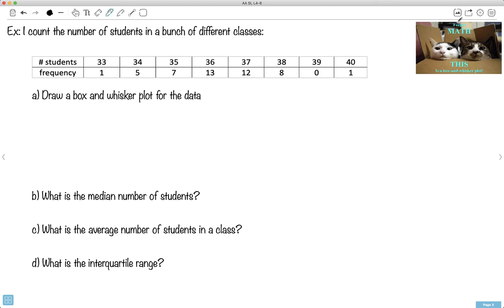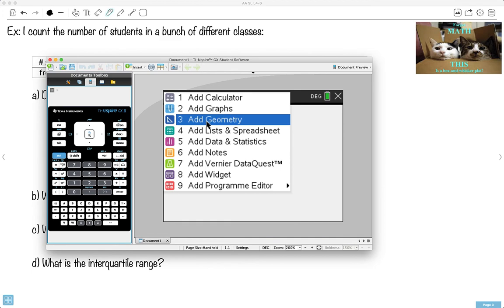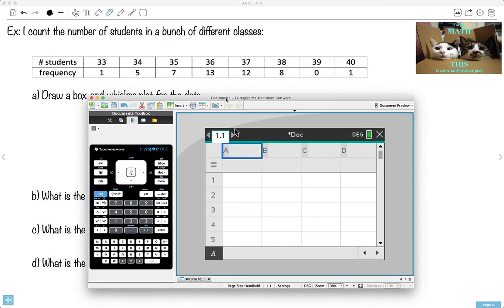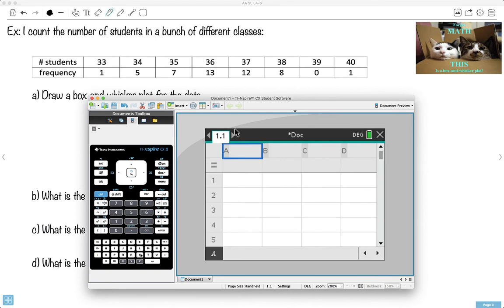Let's do an example then. Never forget math. This is a box and whisker plot. So I'm counting the number of students in a bunch of different classes. This is number of students in a class, and this is the number of different times that happens. There's one class with 33 kids in it. There's five of them with 34. But draw a box and whisker plot for the data. I've got to put all this information into my calculator. First, I'm going to go to lists, and I'm going to make a spreadsheet. So maybe I'll say students. And the next one, I think I'll call it frequency.